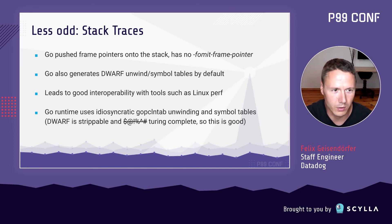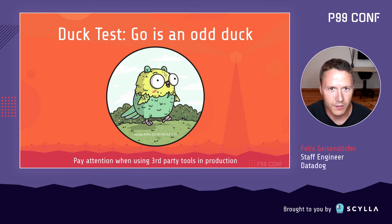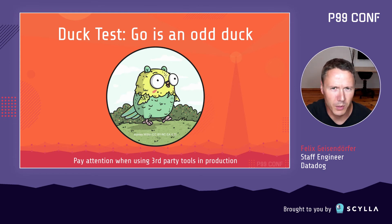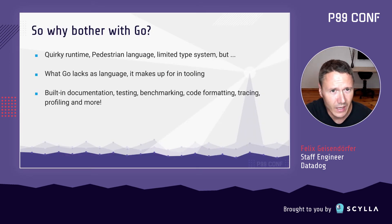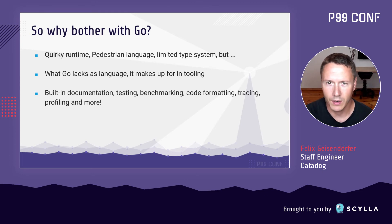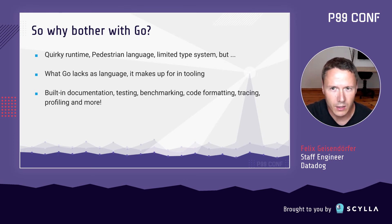So far as our duck test is concerned, Go is an odd duck among compiled languages. From an operational perspective, you'll often need to pay special attention to the details before throwing existing debuggers, profilers, or observability tools at Go programs, especially in production. Go is also sometimes criticized as a pedestrian language with a limited type system — so why bother? One answer is the excellent tooling that ships with Go out of the box.